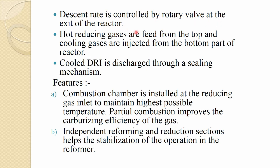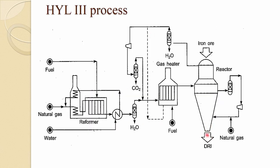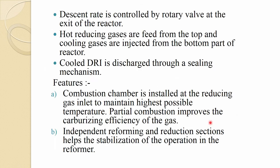The descent rate is controlled by a rotary valve at the exit of the reactor. Hot reducing gases are fed from the top and cooling gases are injected from the bottom part of the reactor. Cooled DRI is discharged through a sealing mechanism. A combustion chamber is installed at the reducing gas inlet to maintain the highest possible temperature, and partial combustion improves the carburizing efficiency of the gas.